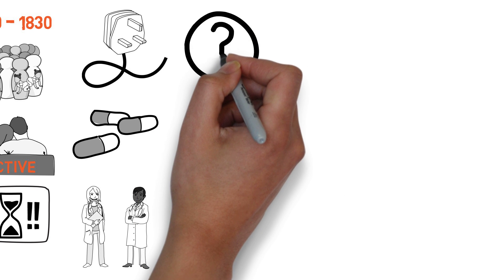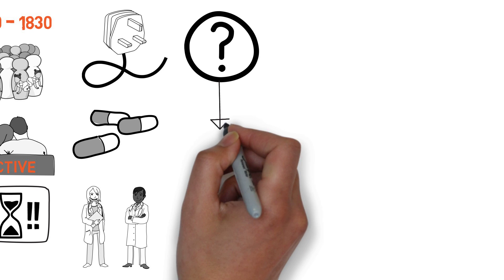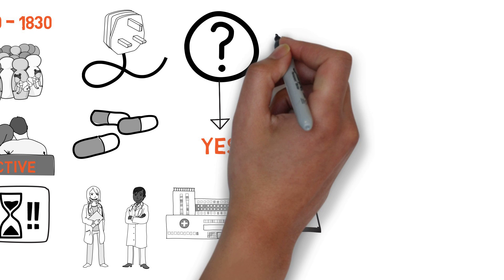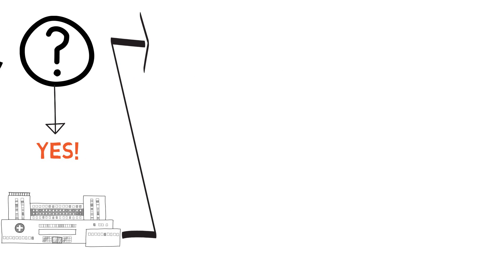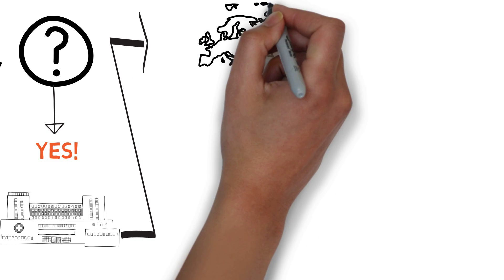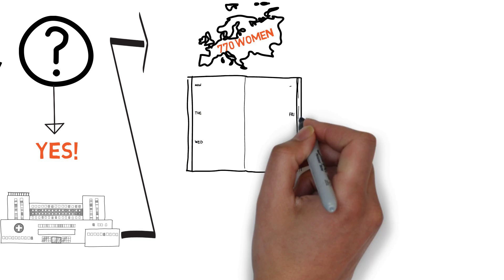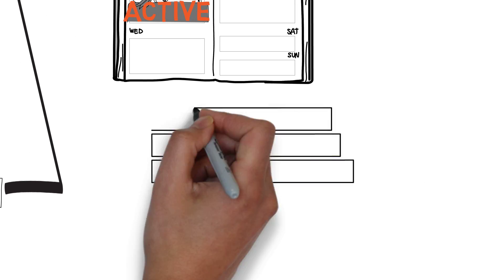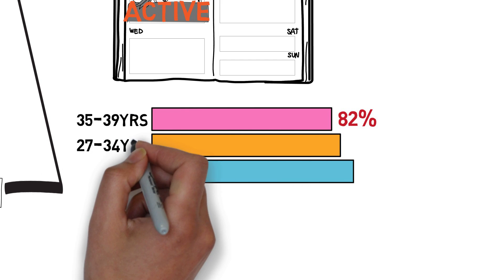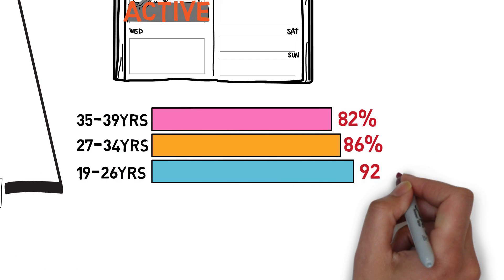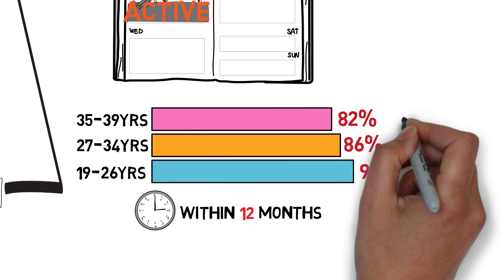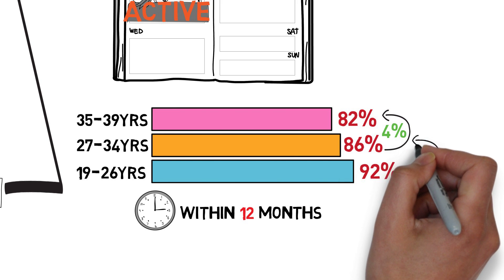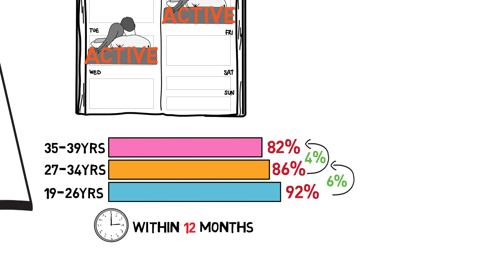So is there a better data set we can look at? And the answer is yes. There's more up to date data we can use, and it tells a very different story. A more recent study considered about 800 women in Europe, and the study found that women in the late 30s who had sex at least twice a week had an 82% chance of getting pregnant within a year, compared to 86% for 27 to 34 year olds. A drop of only 4%. And essentially there's no difference between women in their late 20s or in their 30s.